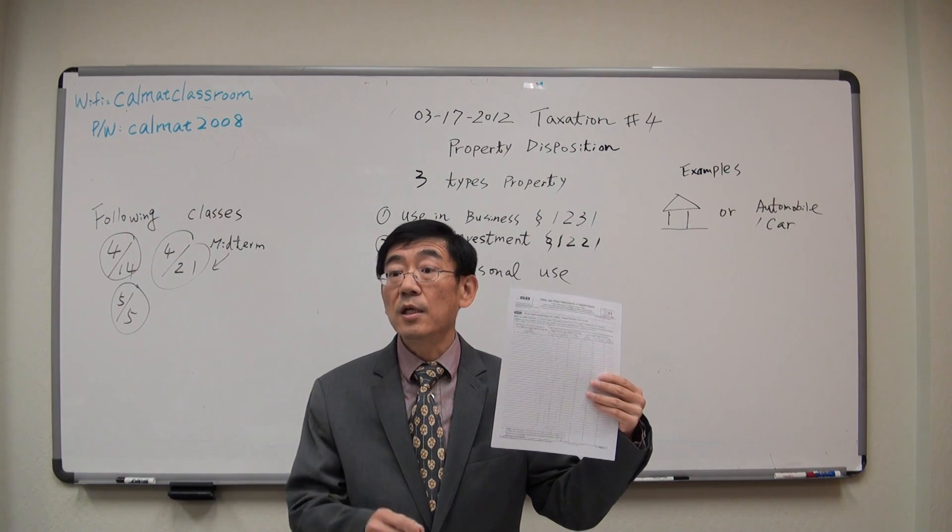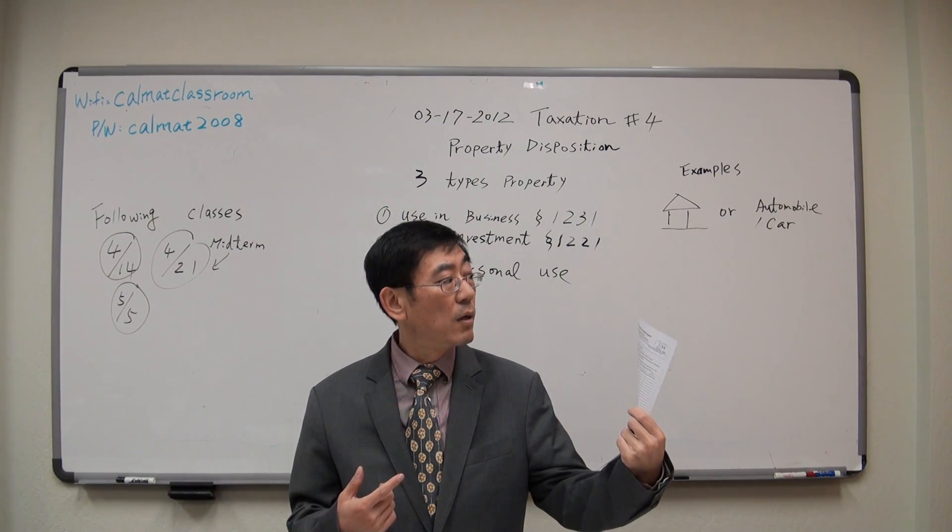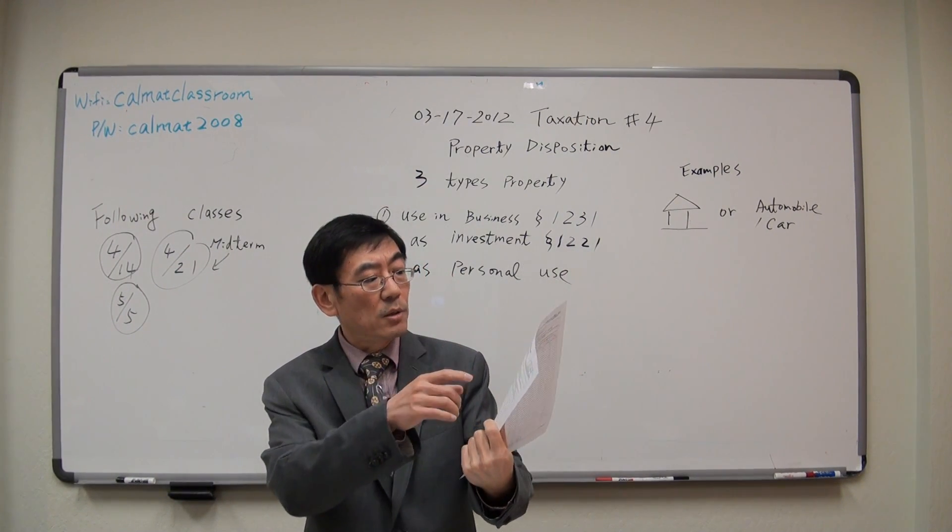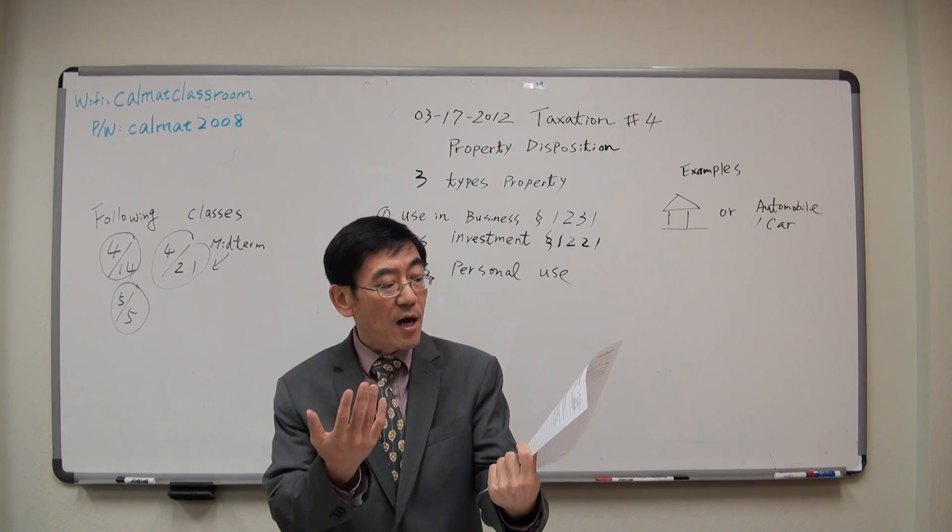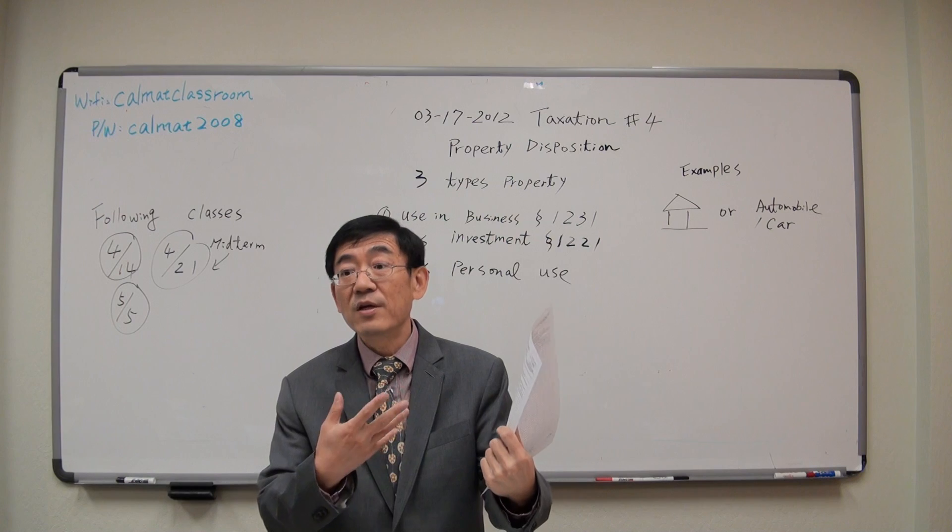Schedule D requires you to file form 8949 together. And this is the list that tells the IRS which stock, what the cost is, and what price you sold at.